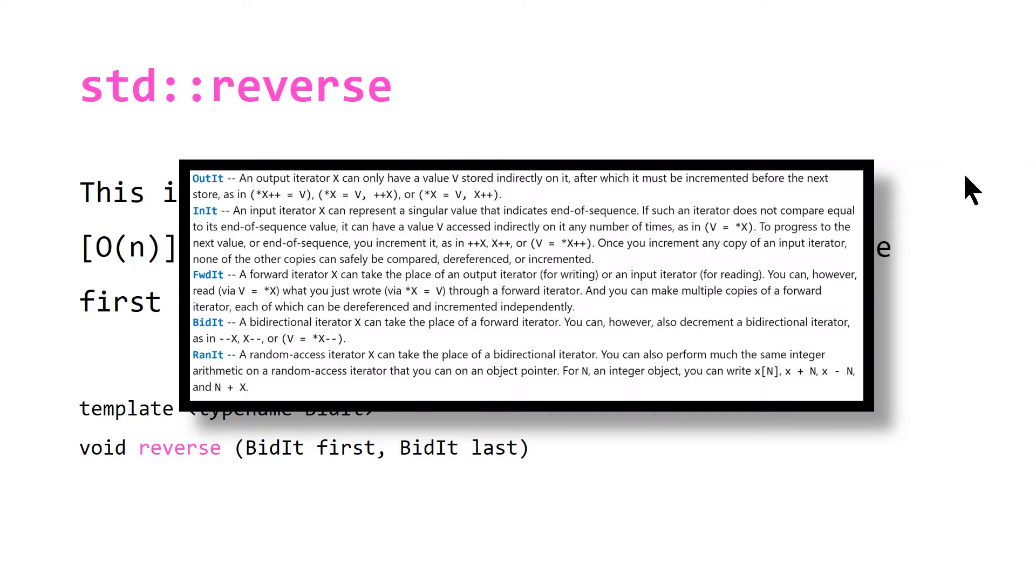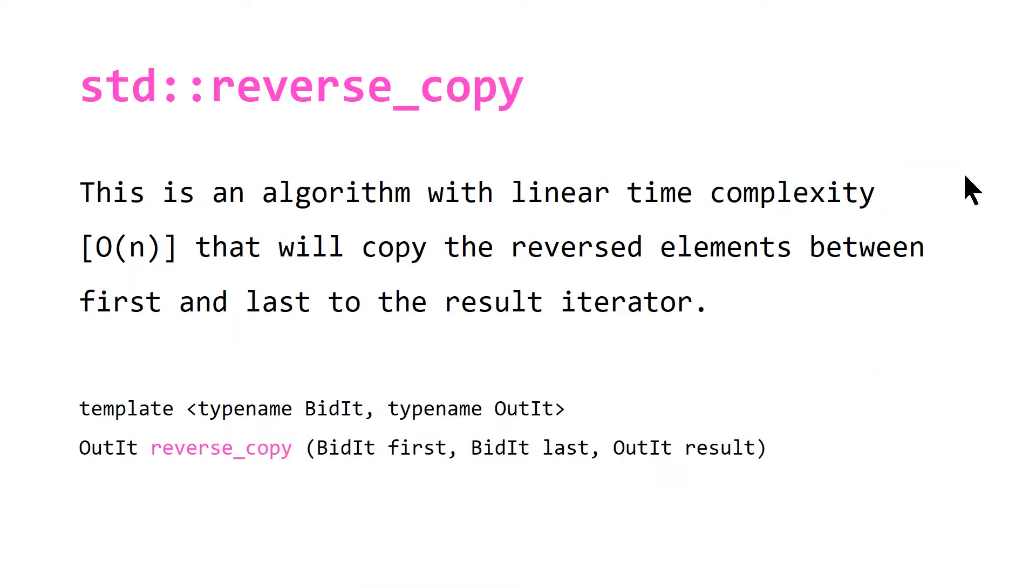For std::reverse_copy, this is a very similar algorithm with linear time complexity that will copy the reversed elements between first and last to the result iterator. So it basically does the same thing but it adds a copy and it will copy it to this output iterator result. So there's an extra parameter.